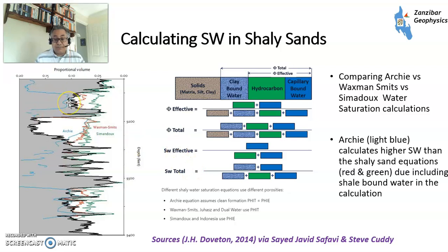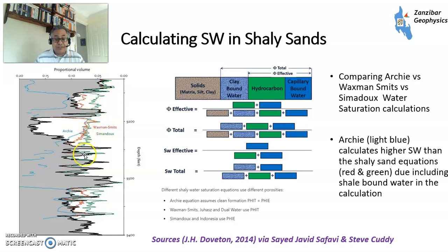This diagram (Doveton, posted by Sir Jaffrey on LinkedIn, with illustration by Steve Cuddy) shows the shaly sands problem. The sky-blue line is the Archie calculation, and then you have different saturation calculations using Waxman-Smith and Simandou equations. You need to use the right equation for the right rock - your petrophysicist will be able to help with that.